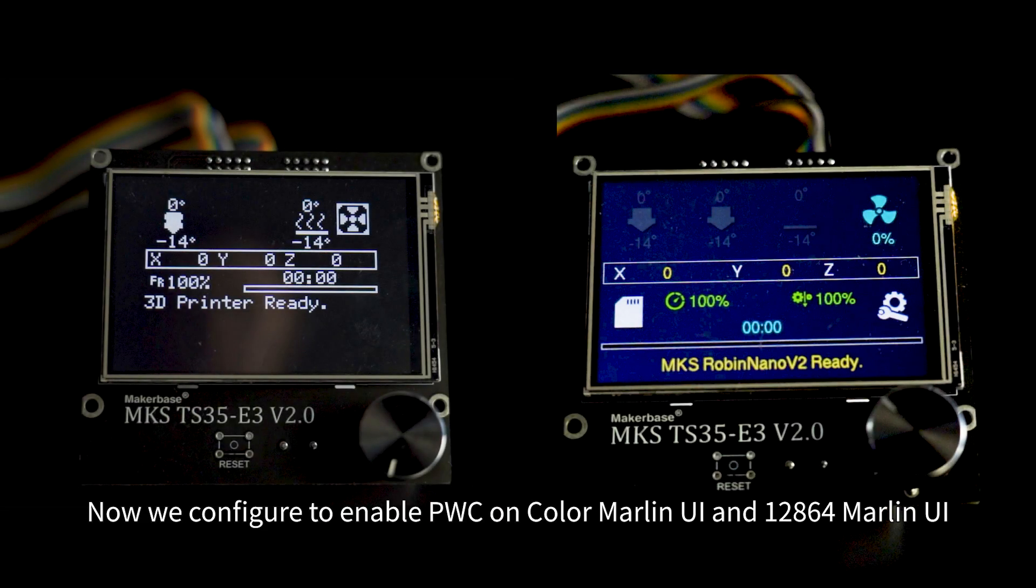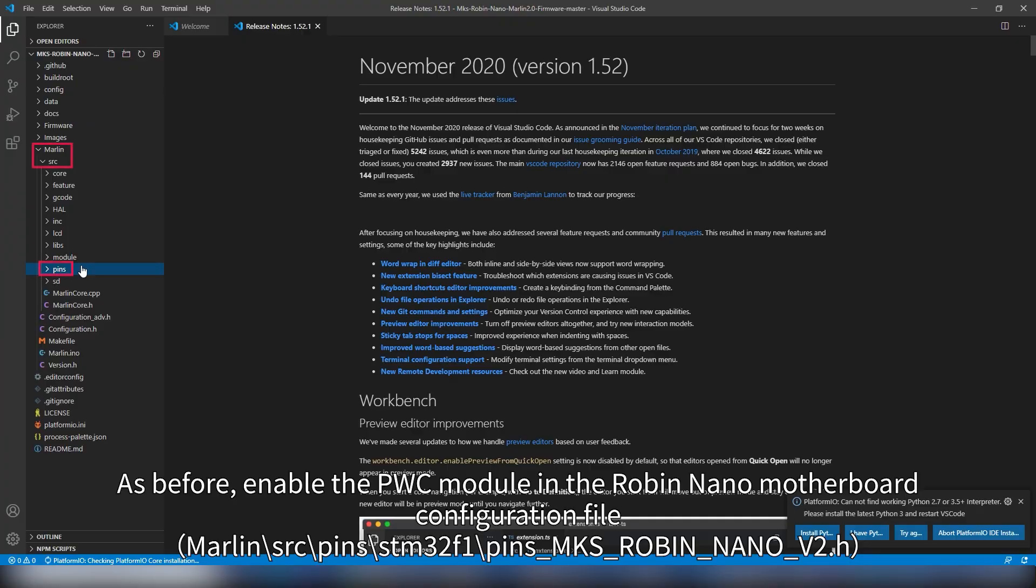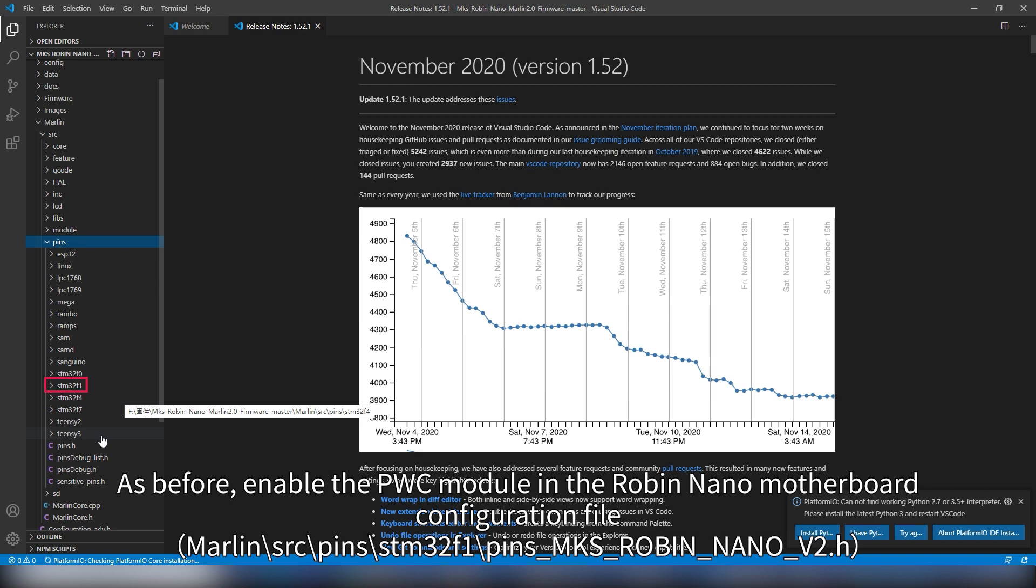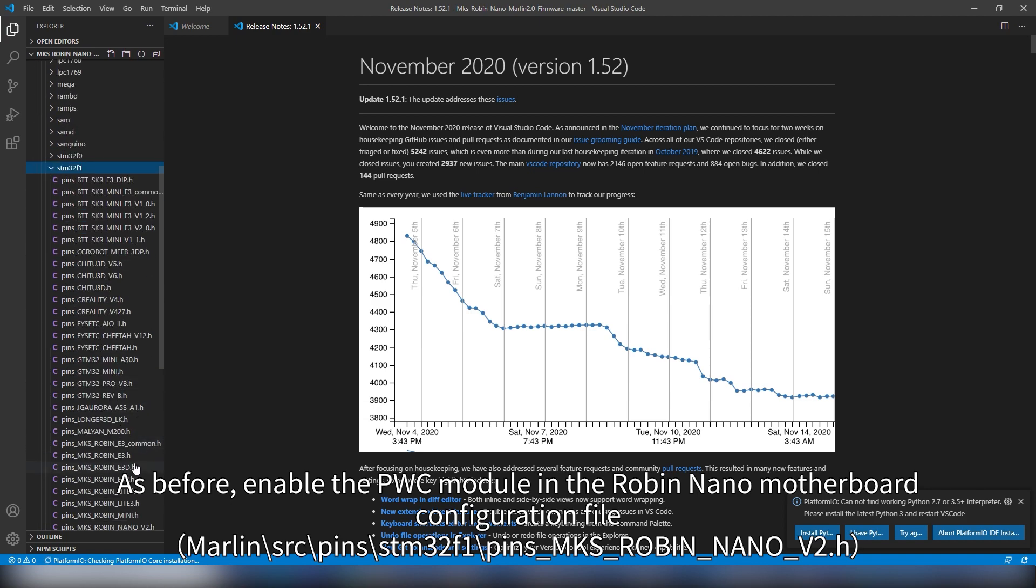Now we configure to enable PWC on color Marlin UI and 128x64 Marlin UI. As before, enable the PWC module in the Robin Nano motherboard configuration file.